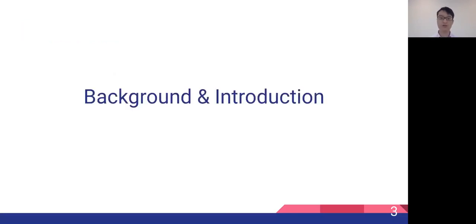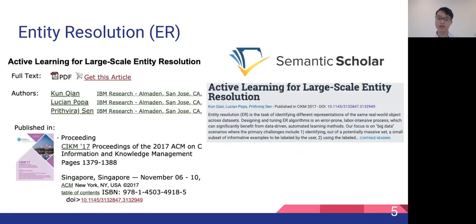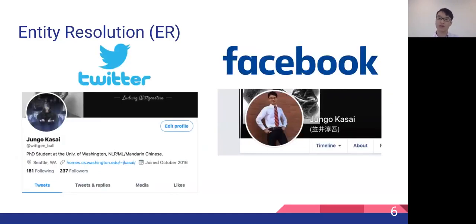First, some background and introduction about entity resolution. Roughly speaking, entity resolution, or ER, is the task of identifying different representations of the same real-world entities across different databases. For example, we have citation records in the ACM database and also in the Semantic Scholar database, and we want to find which record in ACM corresponds to which record in Semantic Scholar.